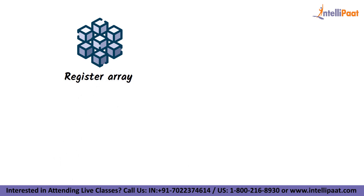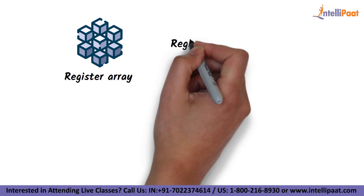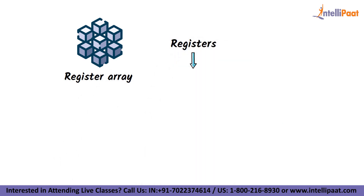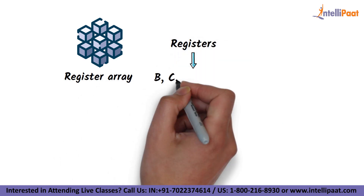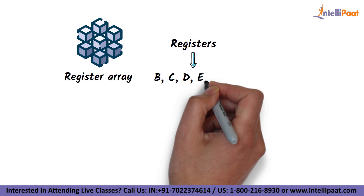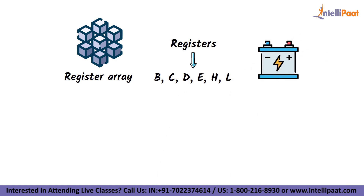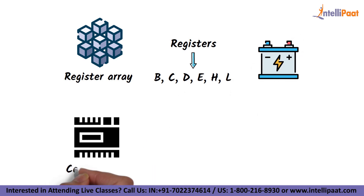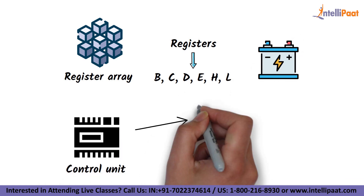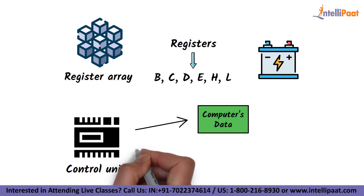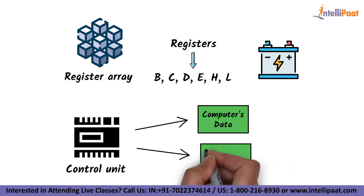The ALU performs arithmetic and logical operations on data from memory or an input device. The register array is made up of registers labeled B, C, D, E, H, L, and accumulator. The control unit is in charge of the computer's data and instruction flow.